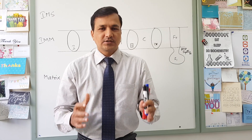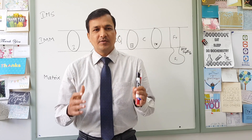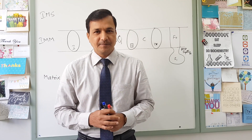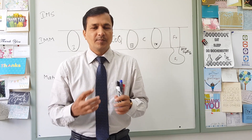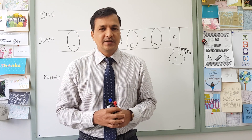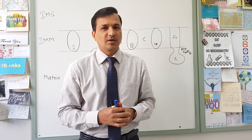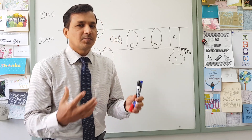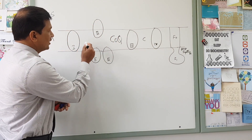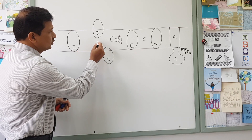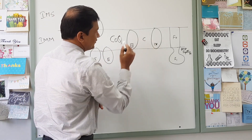The electron transport chain is located in the inner mitochondrial membrane. There are protein complexes embedded in the inner mitochondrial membrane. There are four fixed complexes present in the inner mitochondrial membrane which are part of the electron transport chain: Complex 1, Complex 2 (there are three of them), Complex 3, and Complex 4.